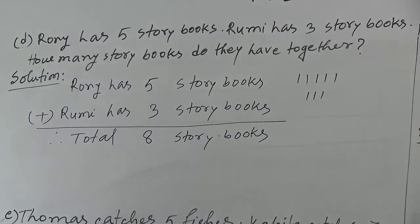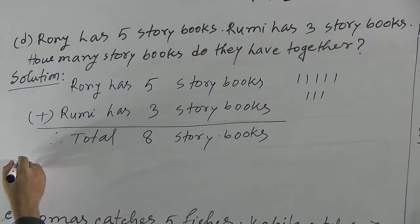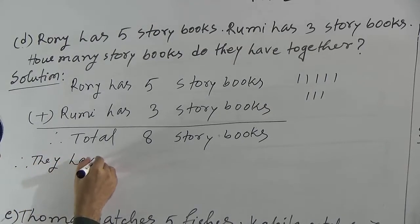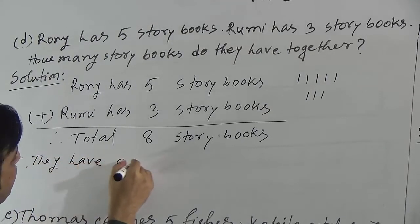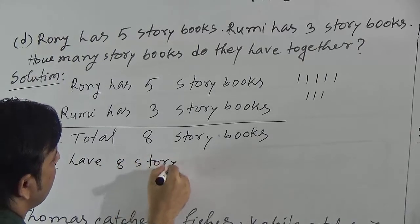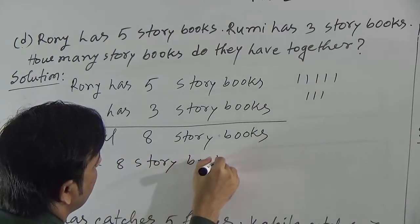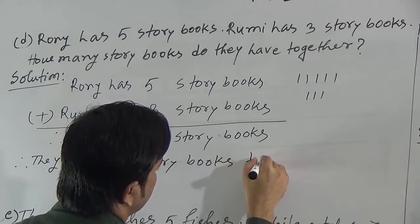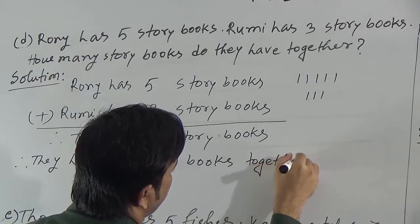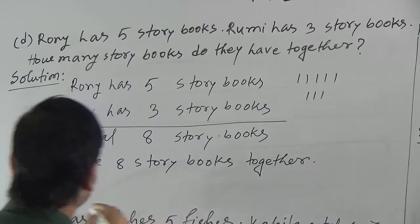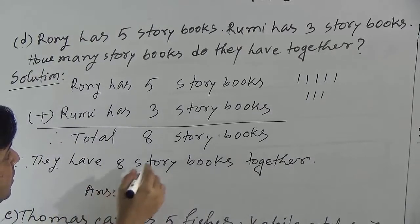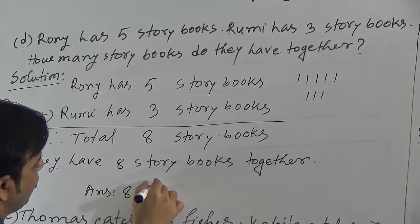It means that they have 8 storybooks together. So we can write: our answer is 8 storybooks.